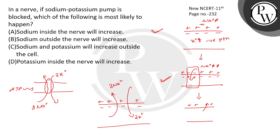If the sodium-potassium pump is blocked, which of the following is most likely to happen? Sodium inside the nerve will increase — this will be correct. Sodium outside the nerve will increase — this is incorrect.